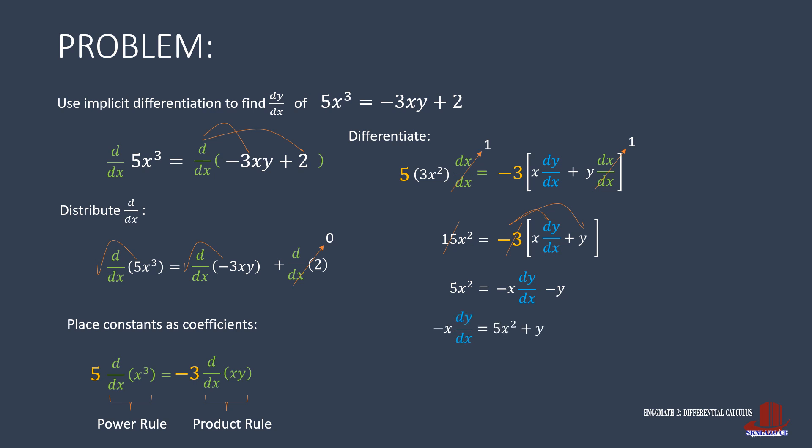Isolate the term with the derivative. So negative y is transposed to the other side with 5x squared. Now to take the derivative, divide everything by negative x, which then makes dy over dx as the negative of the binomial 5x squared plus y all upon x.